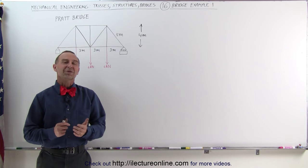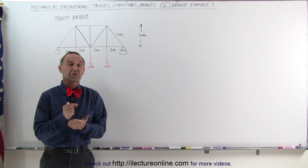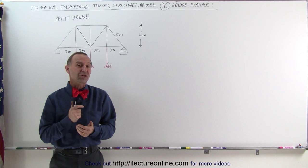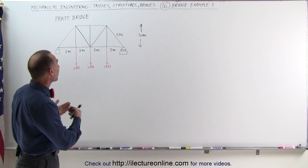Welcome to Electron Line. In this bridge example we have to determine which members are in tension, which ones are in compression, and the amount of the tension or compression on each of the members. This is a little bit more complicated — there are way more members here. This is called a Pratt bridge because of the way these structures are put together.